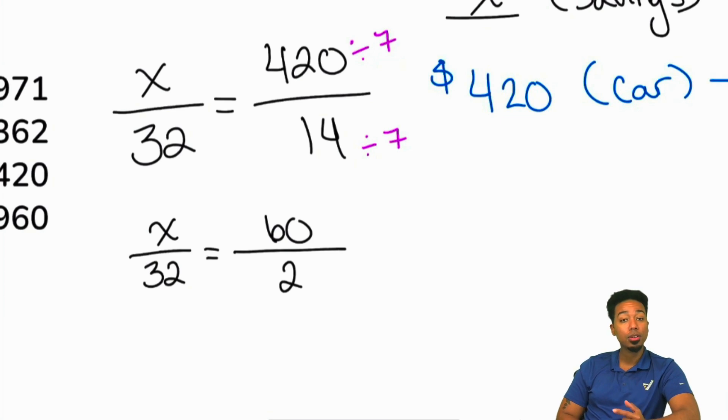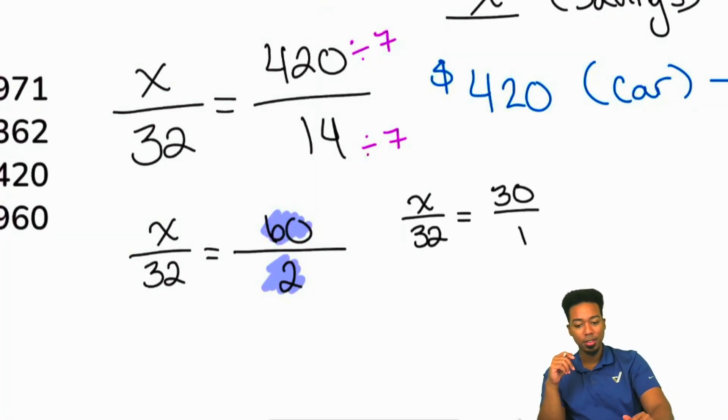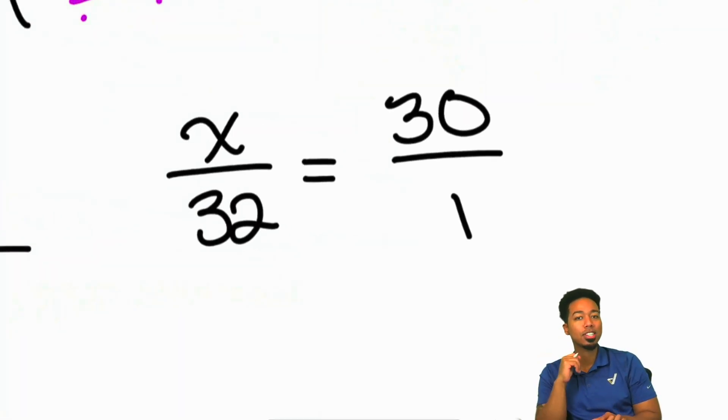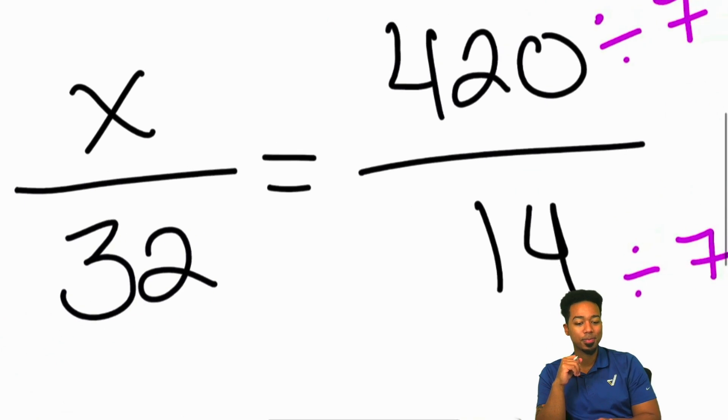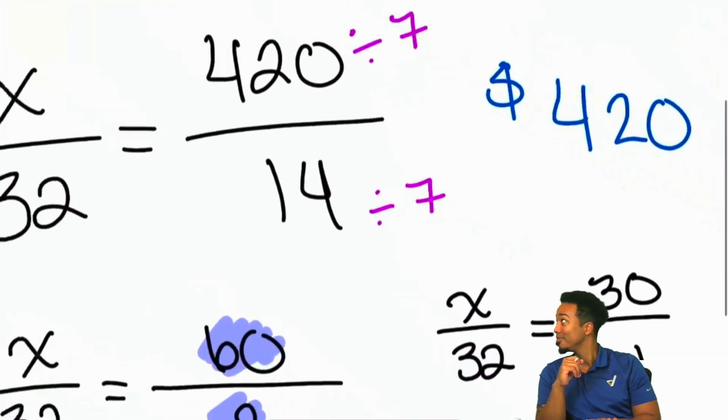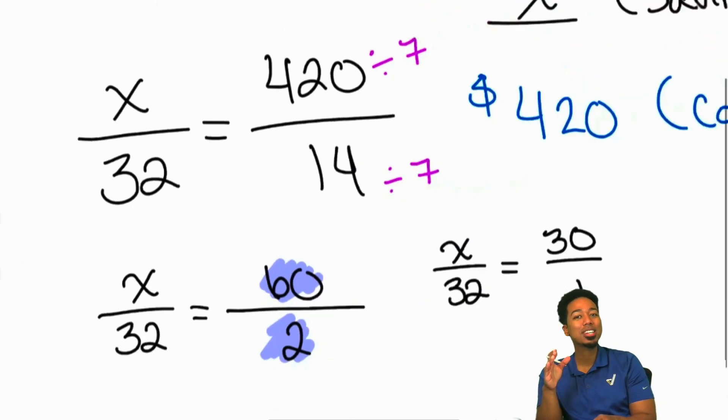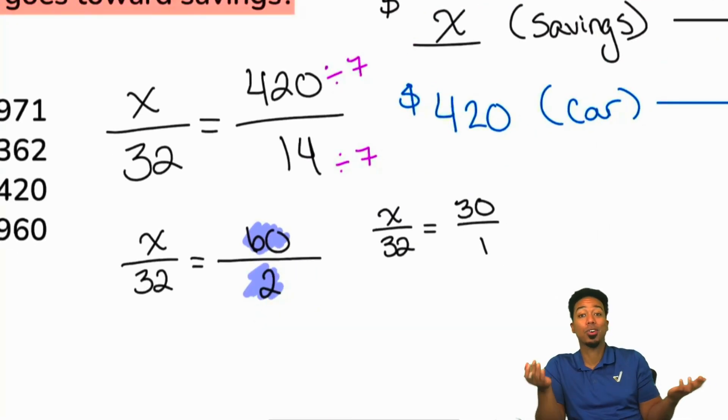And so then, from there, you can continue simplifying if you'd like to, because you'll notice, again, well, 60 and 2 are both divisible by 2, giving you x over 32 equals 30 over 1. My party people, is this proportion easier to solve than this one here? Is this easier than that? Huge difference, right? Massive difference, and all we take advantage of is the fact of how fractions work. We can simplify fractions, and we can do that before we calculate, giving us easier numbers to deal with.